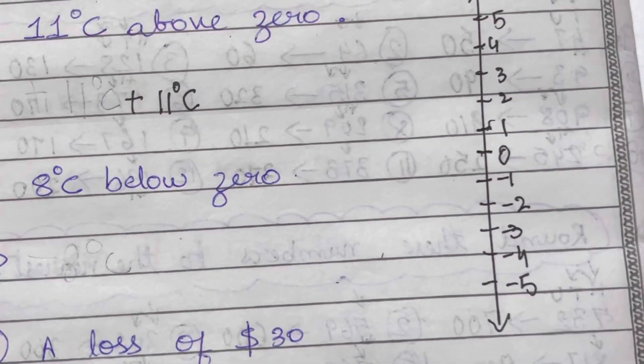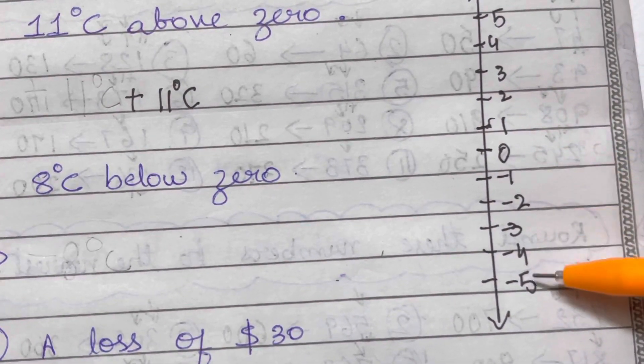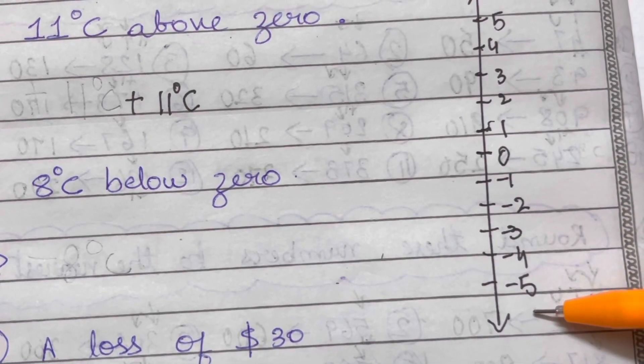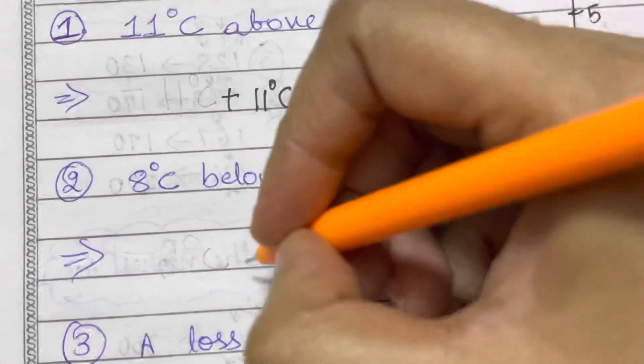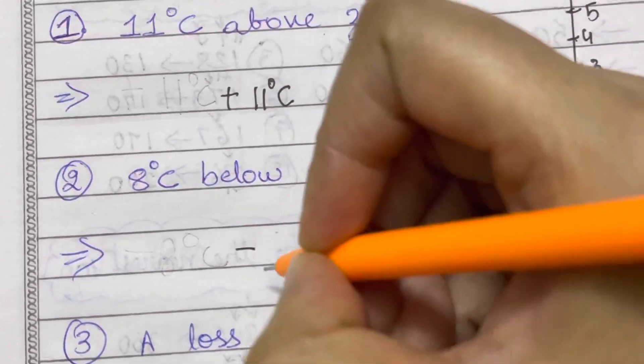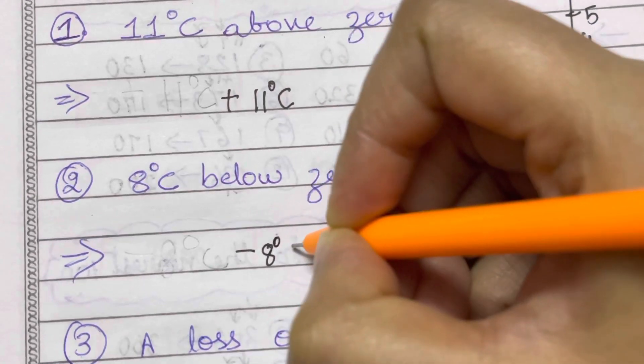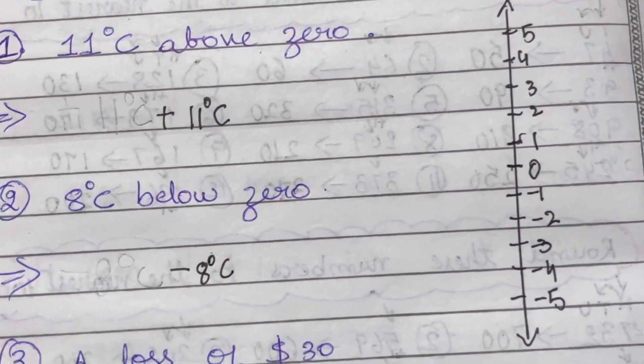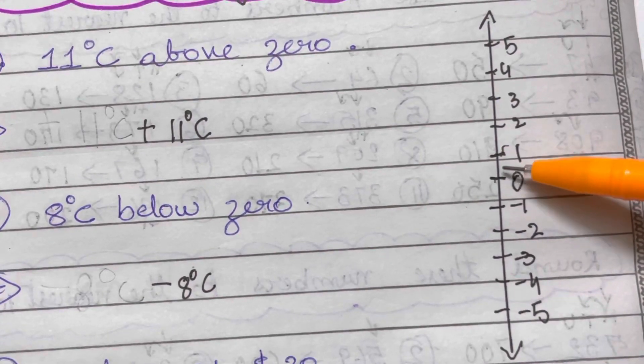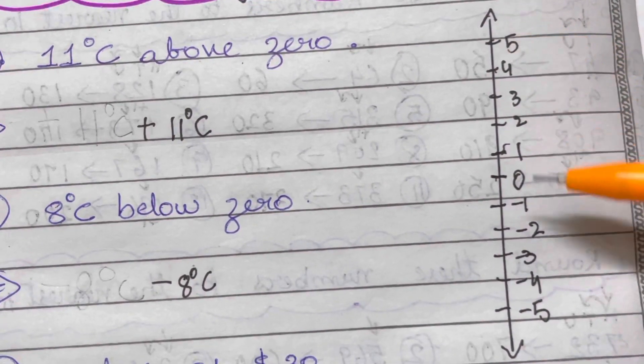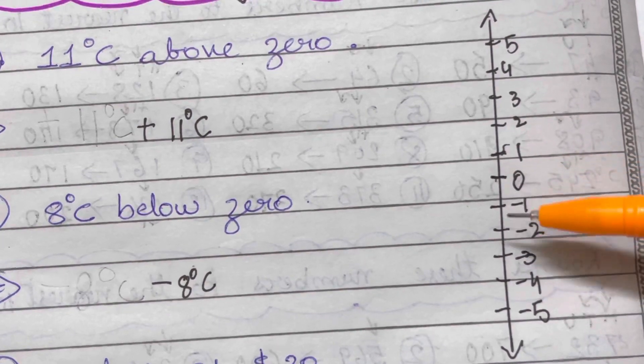8 degrees centigrade below zero. So below zero, as you can see, all the numbers are negative. So when you're going below zero, you'll just have a negative sign - minus 8 degrees centigrade. And as the temperature goes above zero, it becomes hotter and hotter. And as the temperature goes below zero, it becomes colder and colder. That's how you measure temperatures.